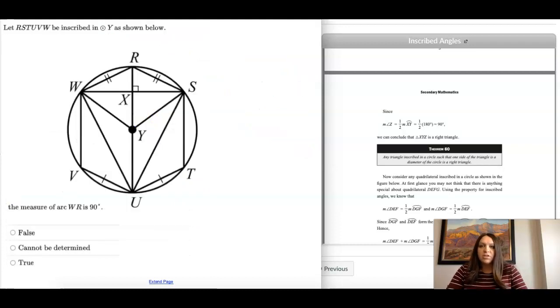So our next question has this giant shape, RSTUVW inscribed in Y, and it's asking about the measure of the arc WR. So it's asking if this arc length does that equal to 90 degrees?